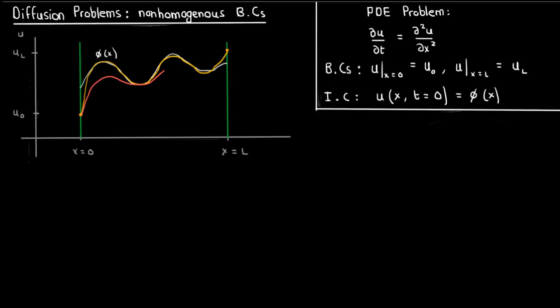Eventually the part remaining in the middle will follow suit in order to get rid of whatever local temperature or concentration gradients are present. So once the system reaches steady state, we get a linear temperature or concentration profile, whatever you're trying to describe with U.